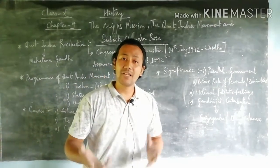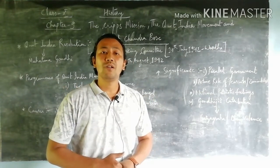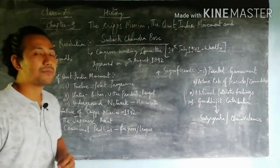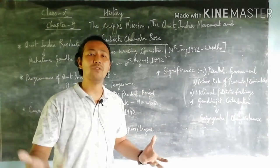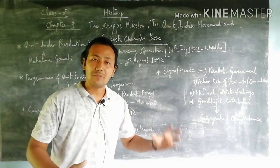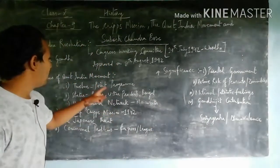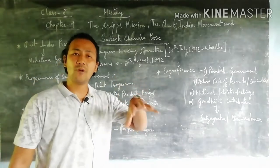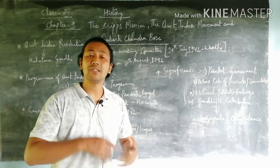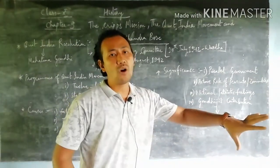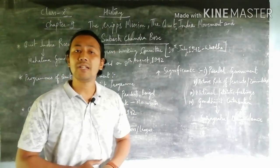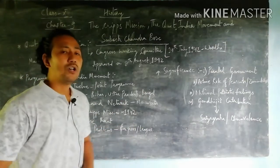After the Quit India Movement got approval on 8th August 1942, let us look at its programs and planning against the British. The first is the 12-point program, which mainly highlighted the problems of how Indians had been dominated and treated by the British through various policies and schemes. This 12-point program was prominently featured in the program list of the Quit India Movement.